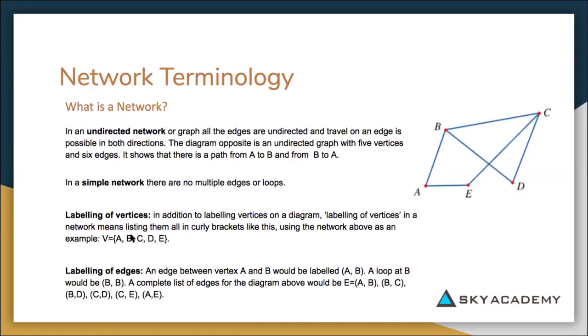But when we're labeling edges, you have to include both nodes that the edges are attached to. So you would put E for edge, and then you would put A comma B into brackets because both those nodes are associated to that edge. And then you would do B to C, B to D, D to C, C to E, E to A.